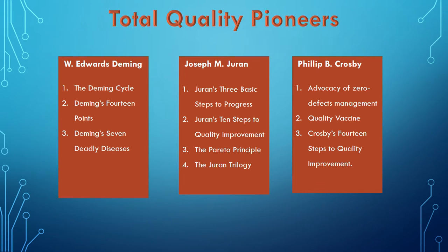Total quality pioneers: many people have contributed to the total quality approach, but three of the most important pioneers are W. Edwards Deming, Joseph M. Juran, and Philip B. Crosby. Deming is best known for the Deming Cycle, Deming's 14 Points, and Deming's Seven Deadly Diseases. Juran is best known for Juran's Three Basic Steps to Progress, Juran's Ten Steps to Quality Improvement, the Pareto Principle, and the Juran Trilogy. Crosby is best known for Advocacy of Zero Defects Management, the Quality Vaccine, and Crosby's 14 Steps to Quality Improvement.